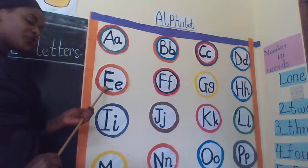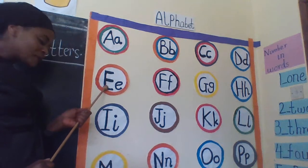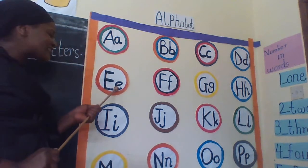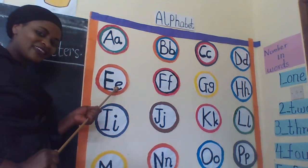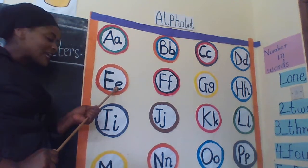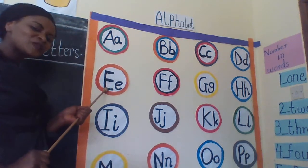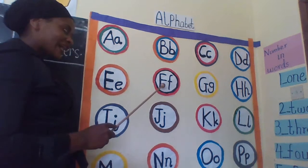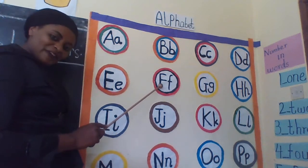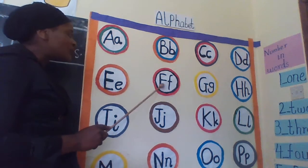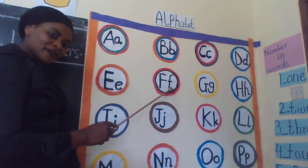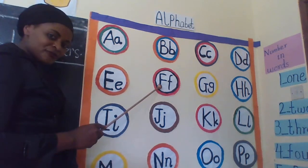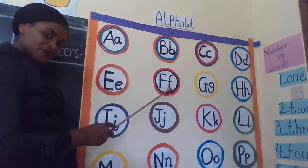Try it. Can you repeat after me? Capital letter E, small letter A. Capital letter E, small letter A. Capital letter F, small letter F. Capital letter F, small letter F.